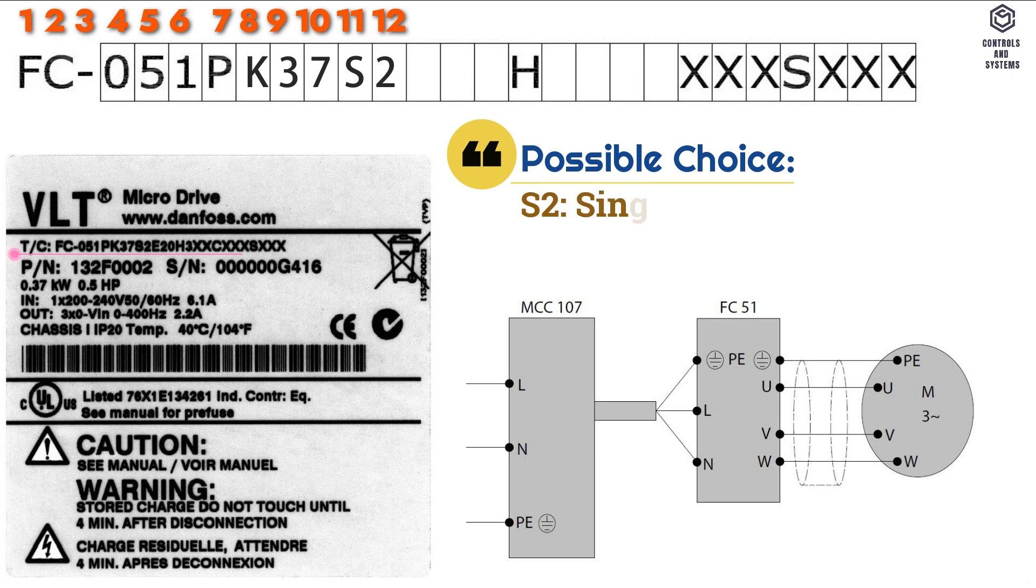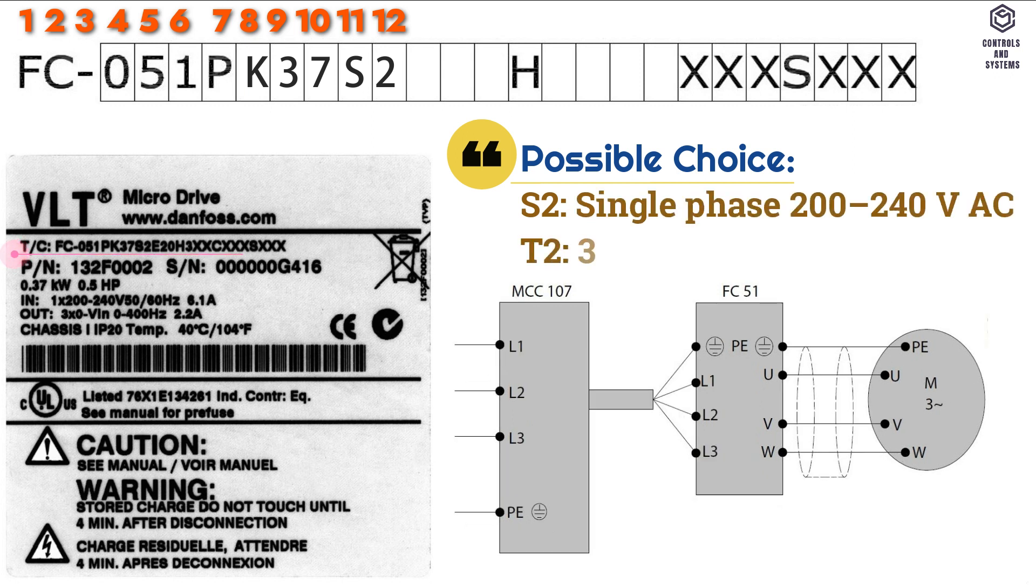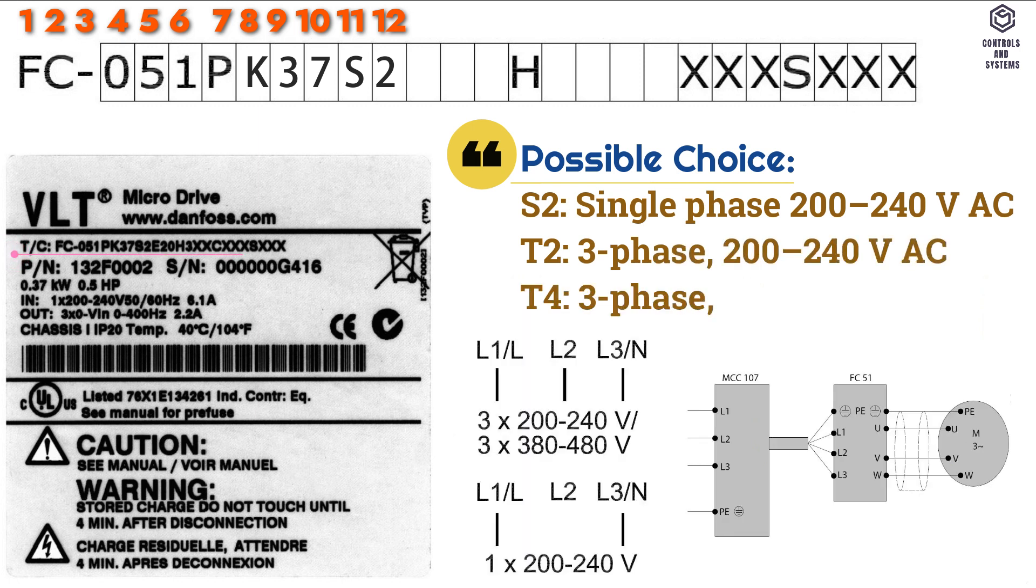S2 that means single phase 200 to 240 volt AC, T2 that means three phase 380 to 480 volt AC.